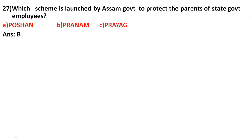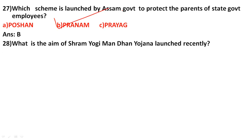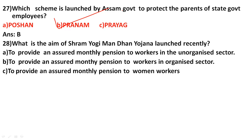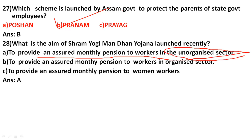What is the aim of the Shram Yogi Mandhan Yojana launched recently? The correct answer is option A: to provide an assured monthly pension to workers in the unorganized sector — giving unorganized sector workers a regular monthly pension.